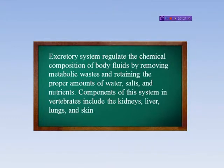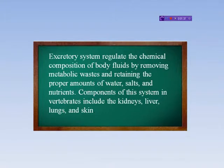Components of the excretory system in vertebrates include the kidneys, liver, lungs, and skin. All of these are excretory structures of the excretory system.